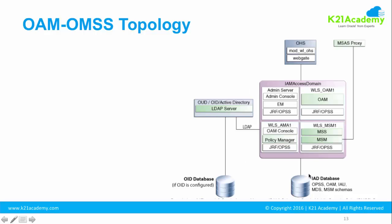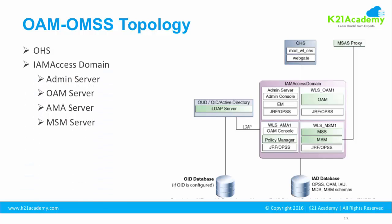To summarize this OAM+OMSS topology: you can use one or two databases where OID, OAM, and OMSS schemas reside. You create a WebLogic domain — the IAM Access Domain — with one admin server and three managed servers. The first managed server is for Oracle Access Manager and the other two are for Oracle Mobile Suite. Then you have an Oracle HTTP Server with a WebGate in front.